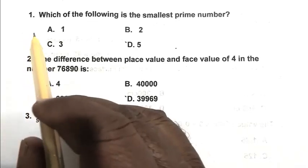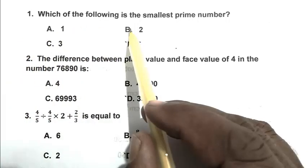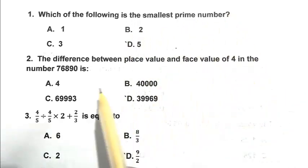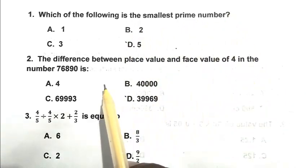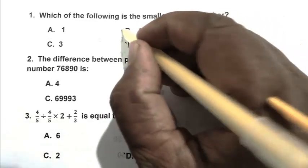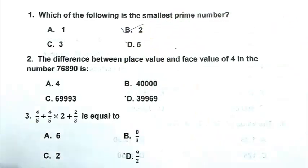Question number 1: Which of the following is the smallest prime number? We know that the smallest prime number is 2. So B is the right answer.